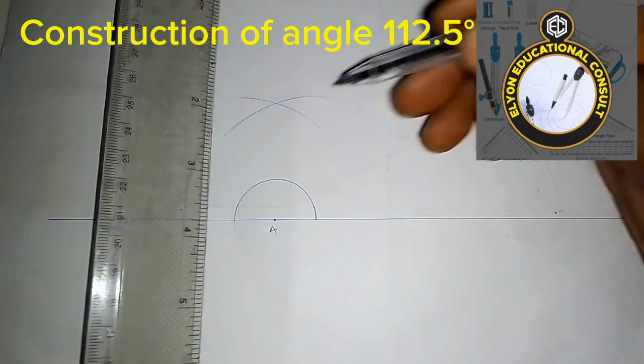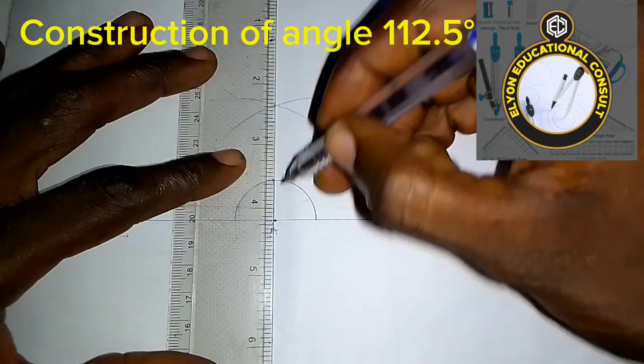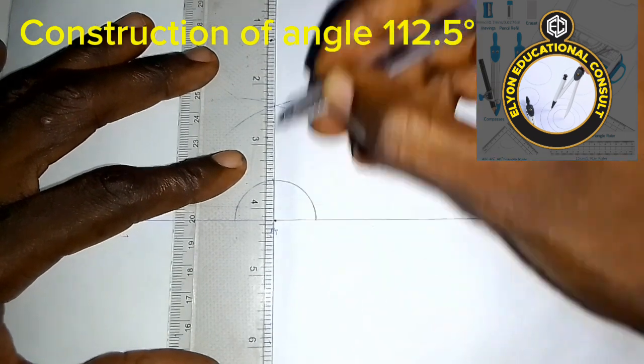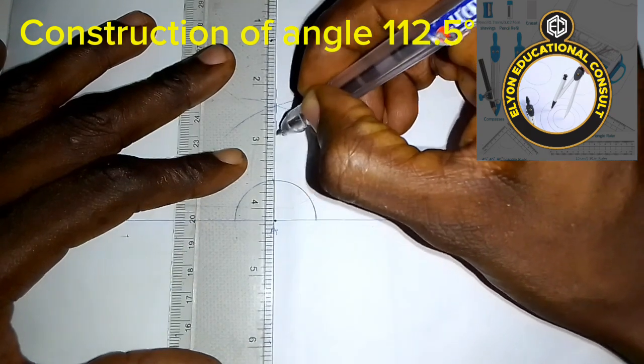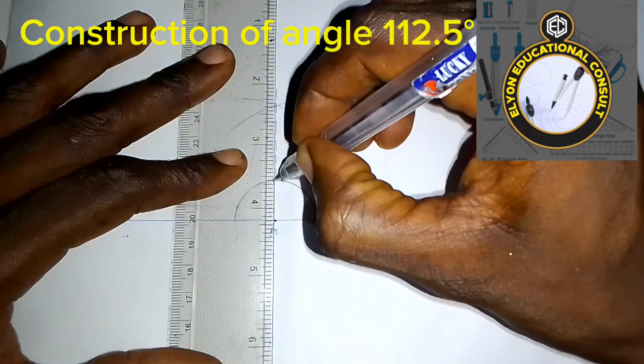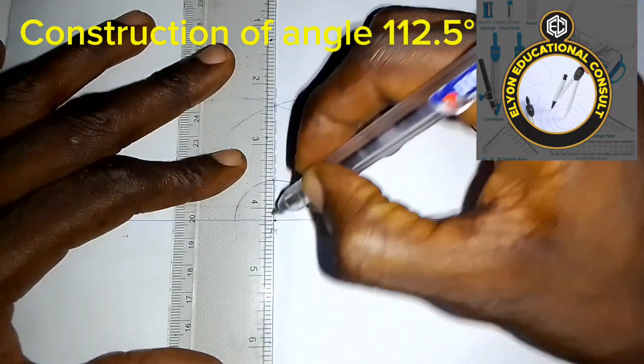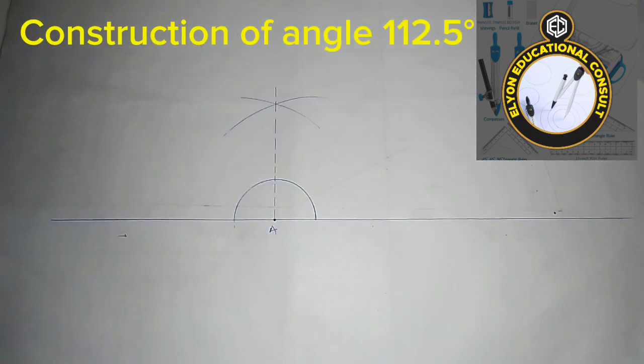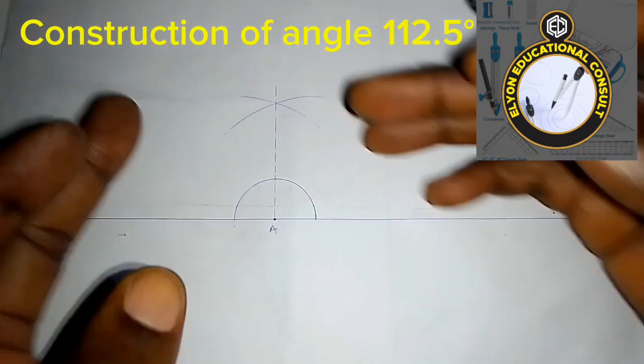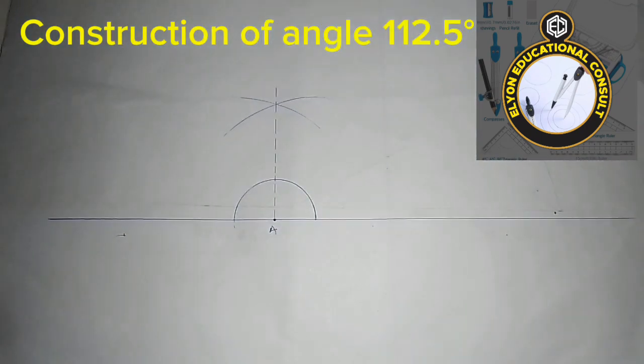the point of intersection of those arcs to the base this way with a broken line. So we have it this way. This is 90 degrees, this other side is also 90 degrees.